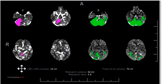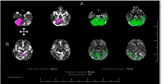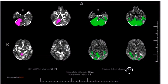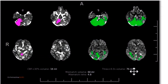Here's another case with the same software package. The CBF defect was 16 ml total, and the Tmax defect — equivalent to our MTT defect — was 76 ml. Subtract the two: 76 minus 16 gives a mismatched volume of 60 ml. Dividing 76 by 16 gives a mismatch ratio of 4.8. That's how you quantitate it.